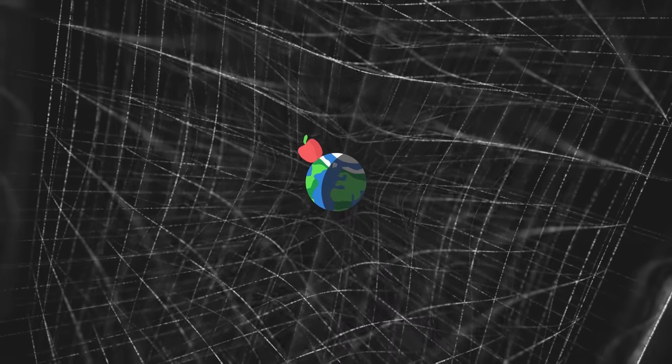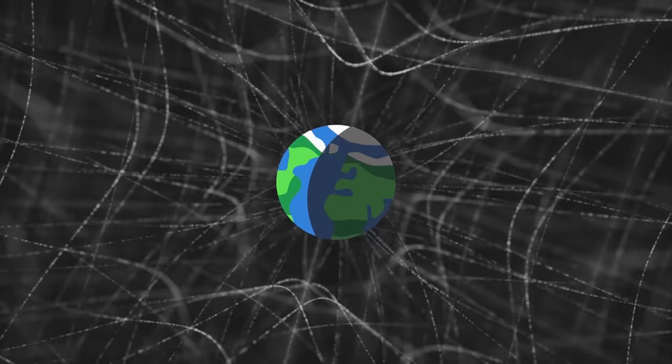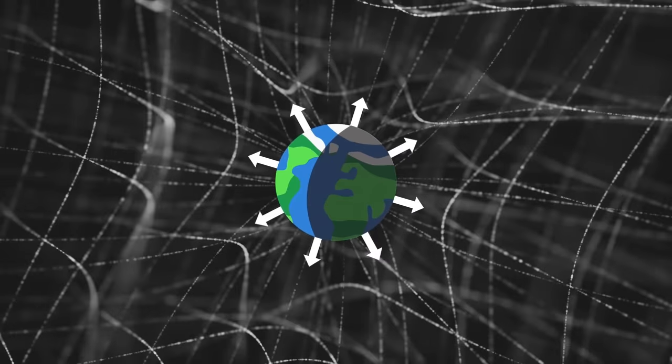With this image of relativity, it is also easy to see that the surface of the planet is constantly accelerating upwards. Because it is always going against the natural movement of the grid.